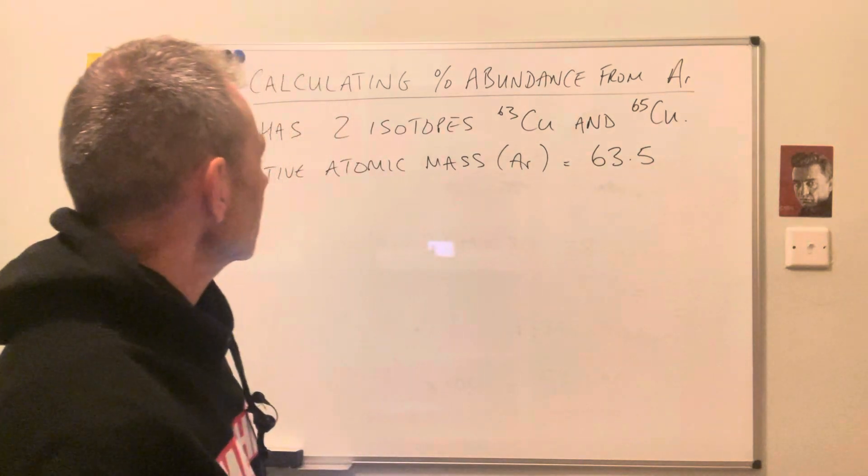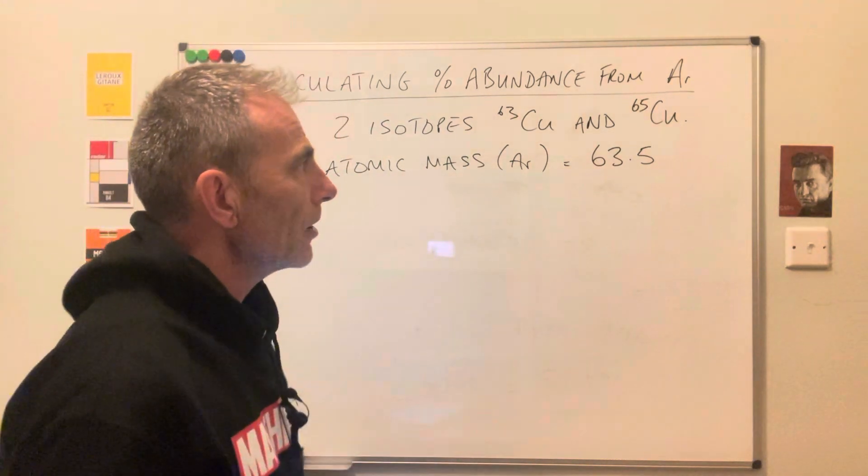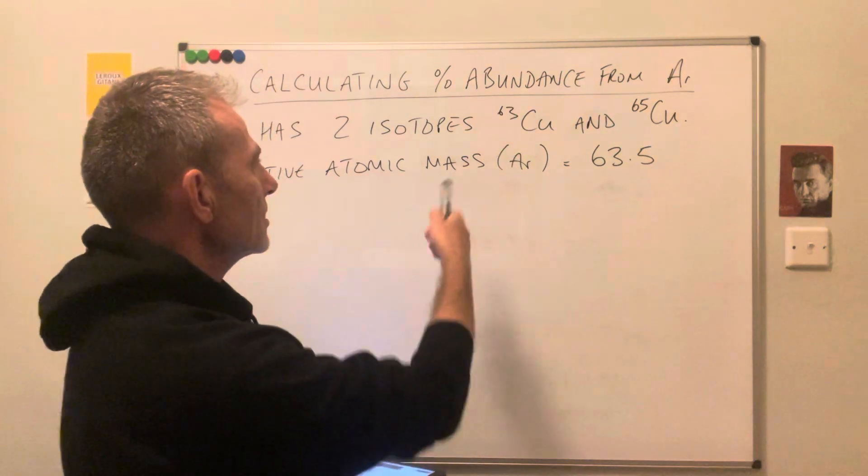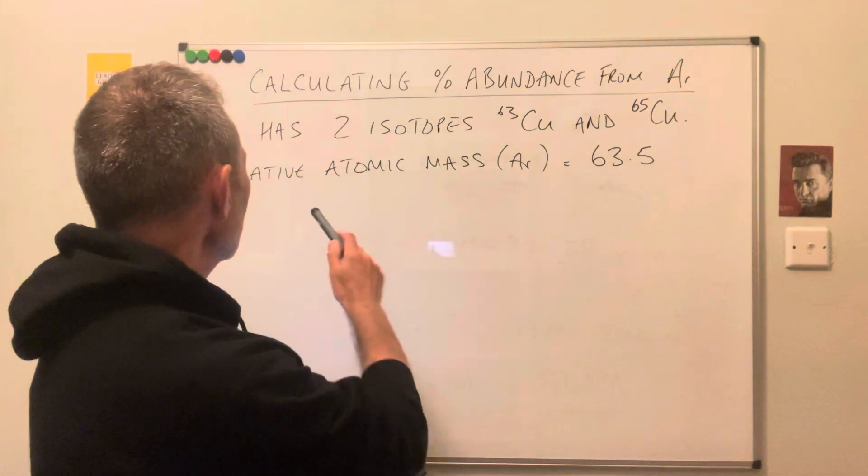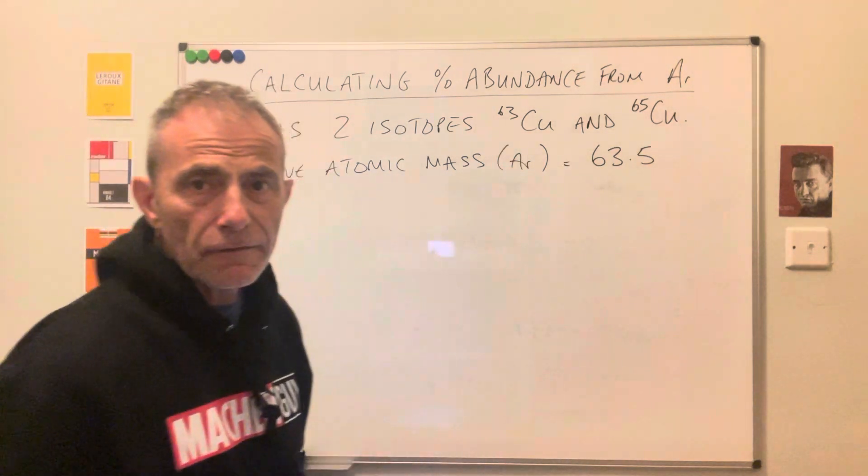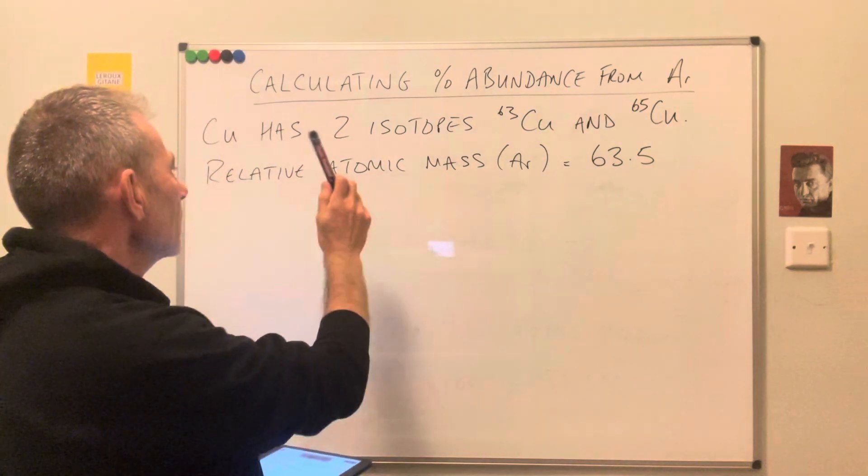Quick video to show you how to calculate percentage abundance from relative atomic mass. I'm just going to use this example. We've got copper, told it's got two isotopes, copper-63 and copper-65, and the relative atomic mass is 63.5.